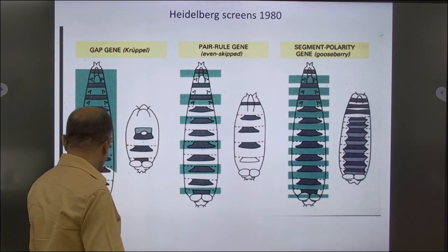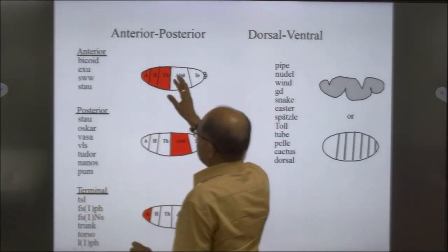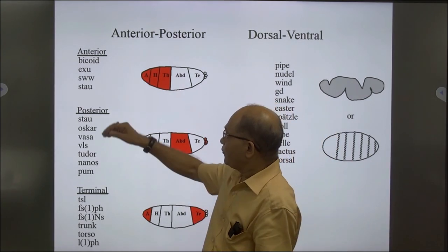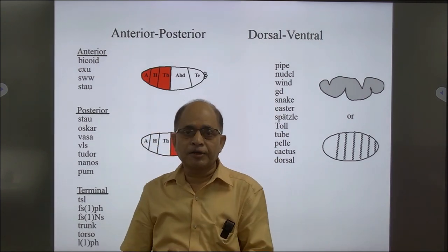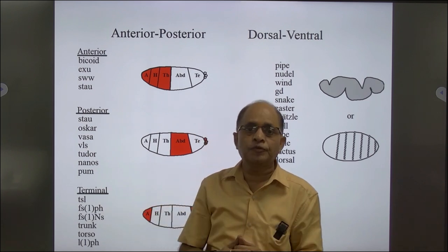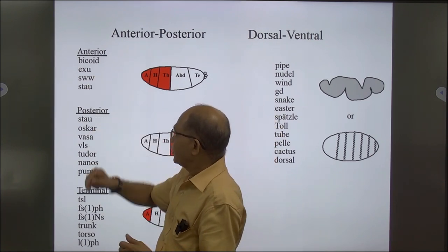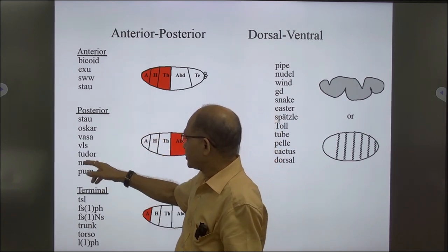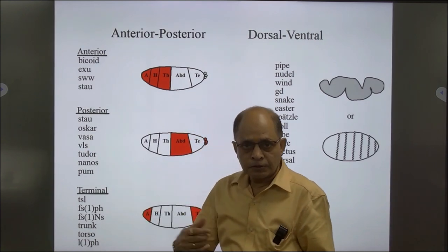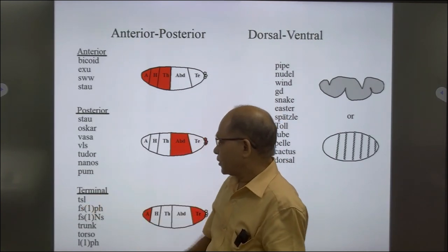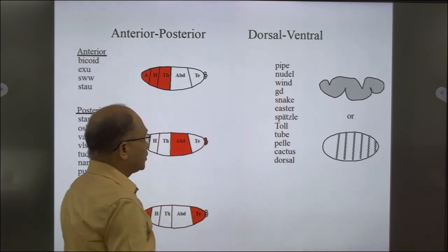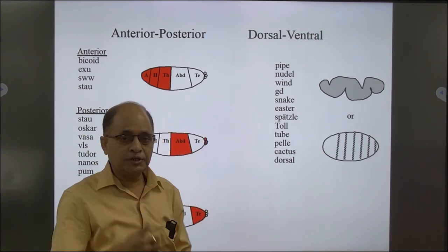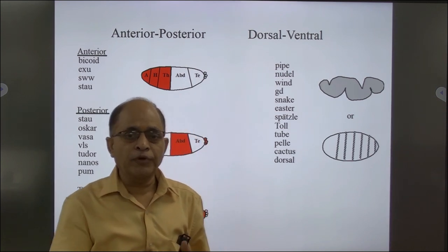Similarly, pair-rule genes — even-skipped and odd-skipped — these two genes express in alternating even and odd segments. If mutated, some segments are missing and size reduces again. Then there are segment polarity genes that give polarity — anterior-posterior and so on. For axis formation, the main gene responsible for giving the anterior side is bicoid. Similarly, in the posterior there are genes like nanos and vasa responsible for the posterior terminal. For dorsal-ventral, genes like wingless and decapentaplegic are responsible for giving dorsal or ventral identity.